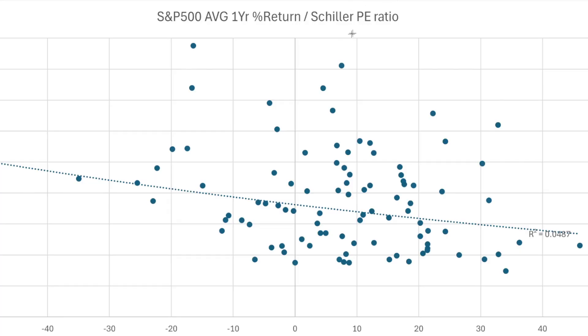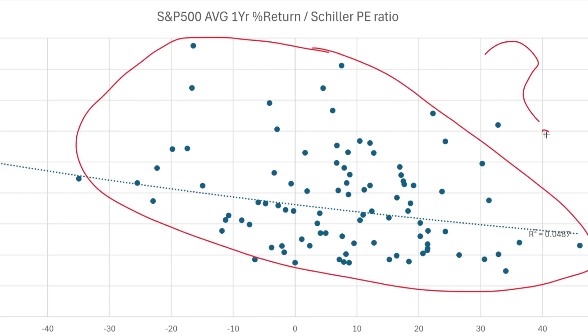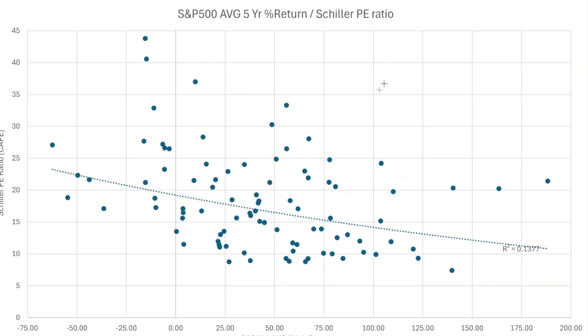The indicator is meant to be used for long-term value investing, but let's see how well it predicts one-year returns. And it just sucks. An R-squared value of less than 0.5, you can pretty much just disregard it.